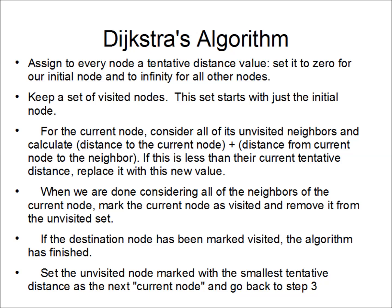It starts running at the initial vertex. For a current vertex, you add the vertex to a visited set and remove it from the unvisited set. Then you calculate the distance to the current vertex plus the weight of the edge between the current vertex and its unvisited neighbors. If this value is less than the current stored tentative distance to that vertex, you replace the stored distance with the newly calculated value.